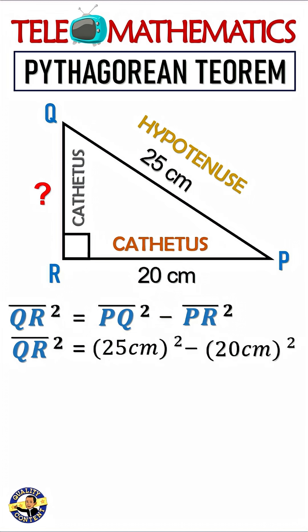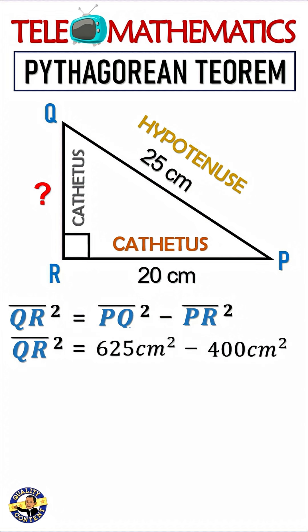Solving each power, we obtain 625 cm² and 400 cm². Subtracting these two values, it reduces to 225 cm².